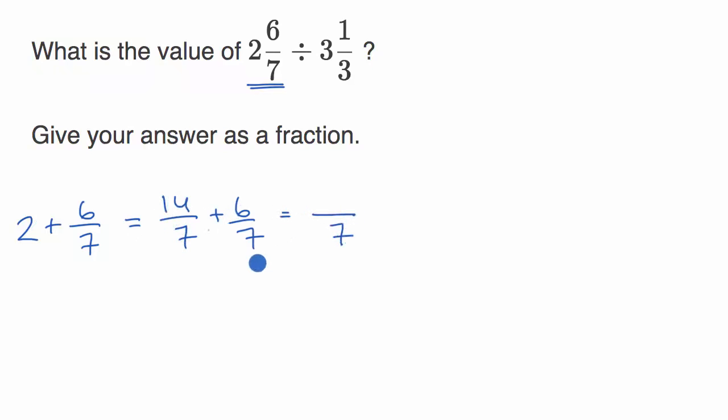So 14-sevenths plus six-sevenths, I have a common denominator here, so we're speaking in terms of sevens. So I have 14 of something plus six of something, well, now I'm going to have 20-sevenths. So this first mixed number I could rewrite as 20 over seven.